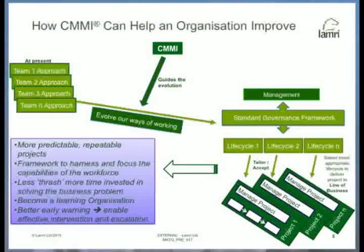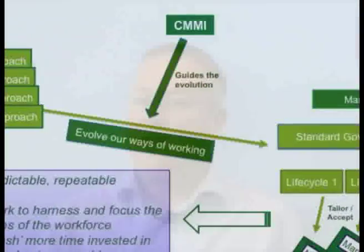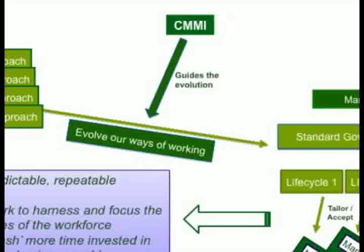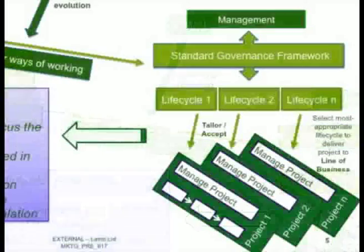How can CMMI be used to help an organisation improve? Consider a typical scenario: an organisation with a number of development teams spread out over different locations. Each of those teams will almost certainly have a slightly different approach. If you want to improve those teams, a key thing is to understand where they are now and then start to bring those approaches together — to harmonise them — in order to get the most effective and efficient way of working. The CMMI can guide that evolution across multiple teams so you end up with a standard governance framework where management can see what each project and team is doing, using a common language and common set of values, understanding how well each team is progressing and what issues and risks they face.